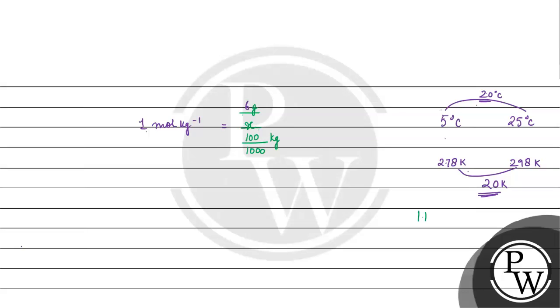How? We have one kilogram equals thousand grams, and one gram equals one upon thousand kilograms. Now, we have one mole per kilogram equals six into thousand by hundred into x.